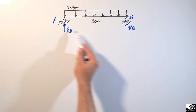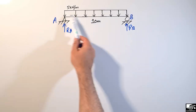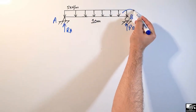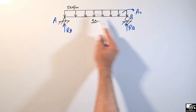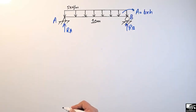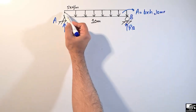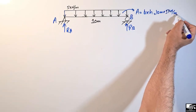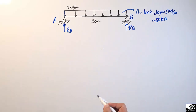To find the support reactions, we first need to determine the total load from this uniformly distributed load by converting it to a point load. We calculate the area of the rectangular load: area equals base times height. The base is 10 meters and the height is 5 kilonewton per meter, so we get 50 kilonewton as the total load acting on the beam.